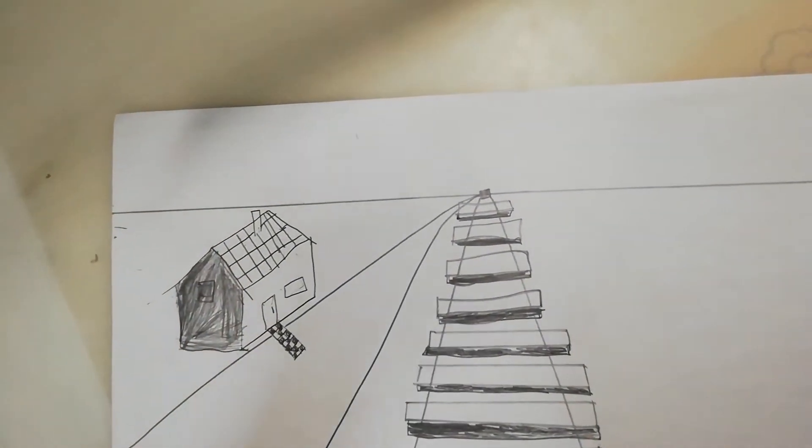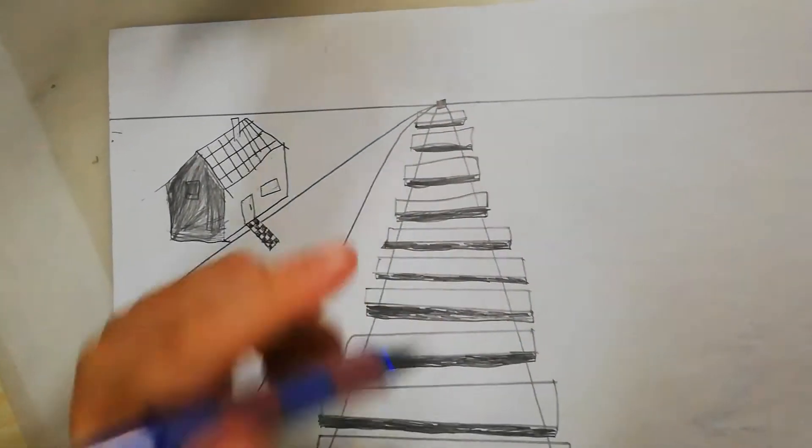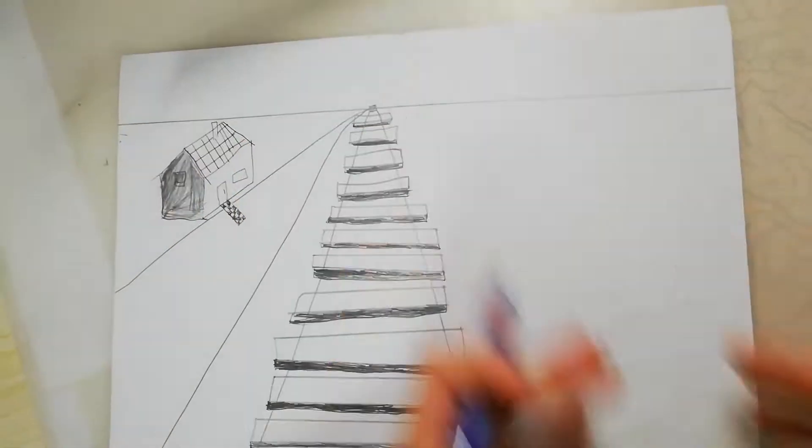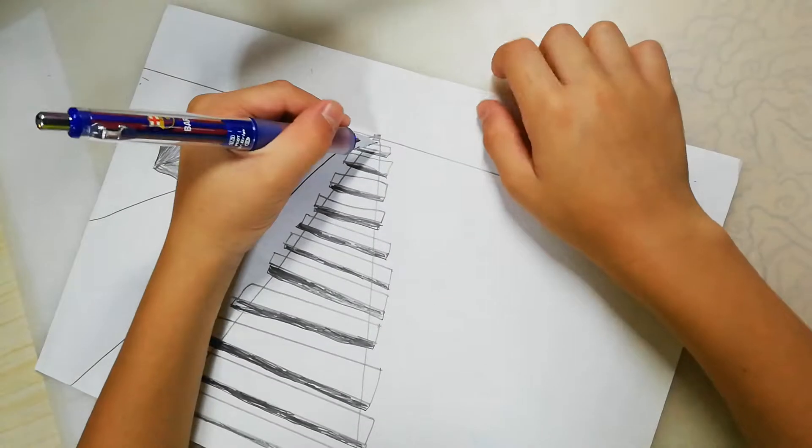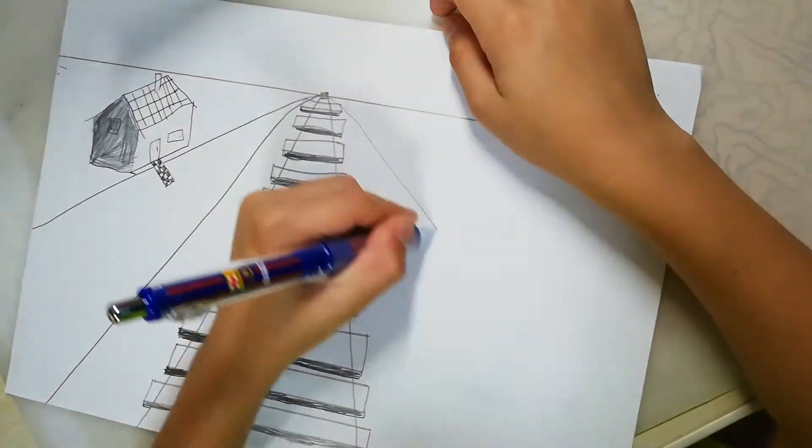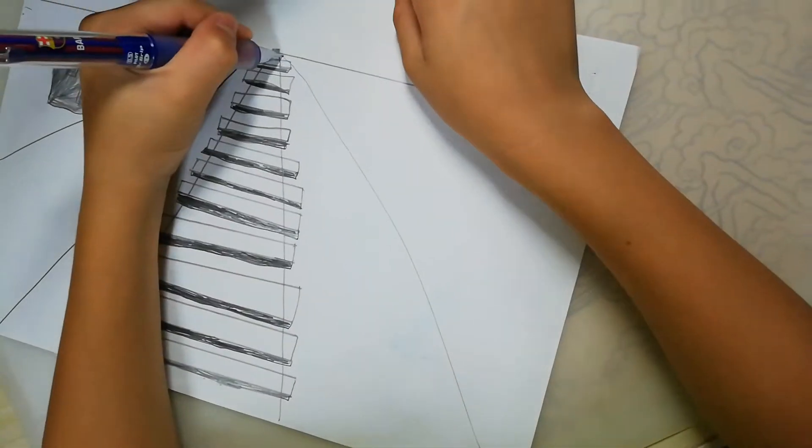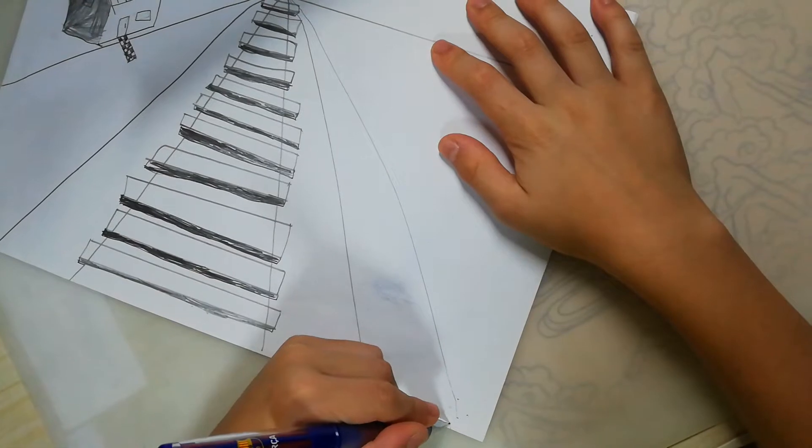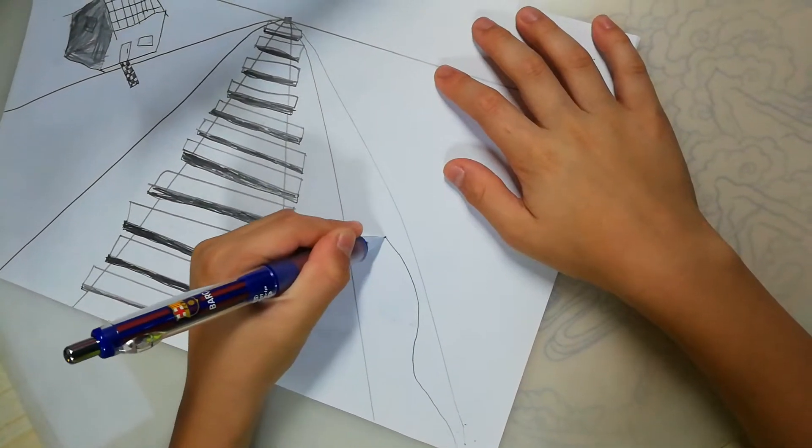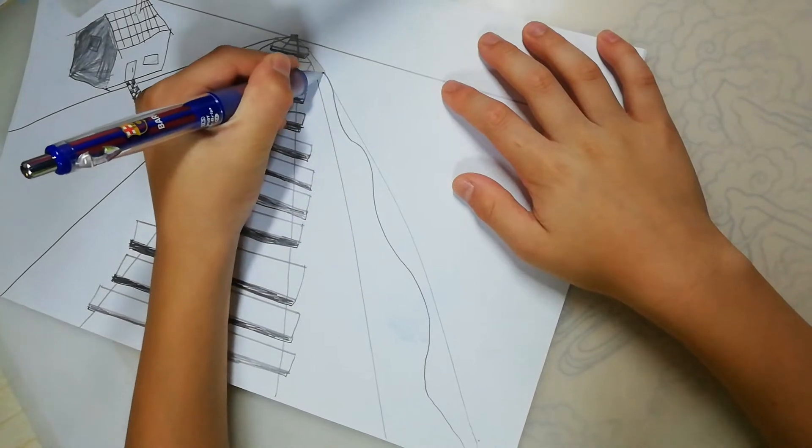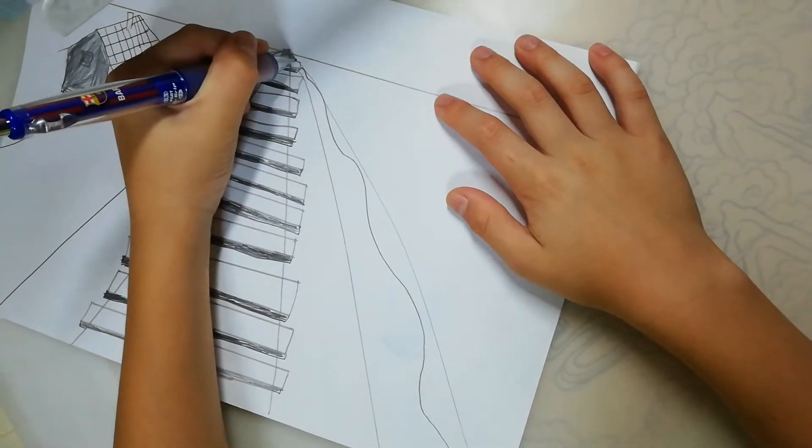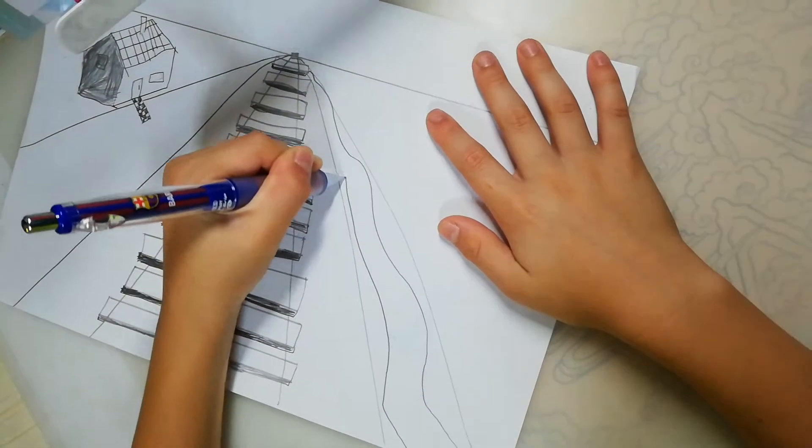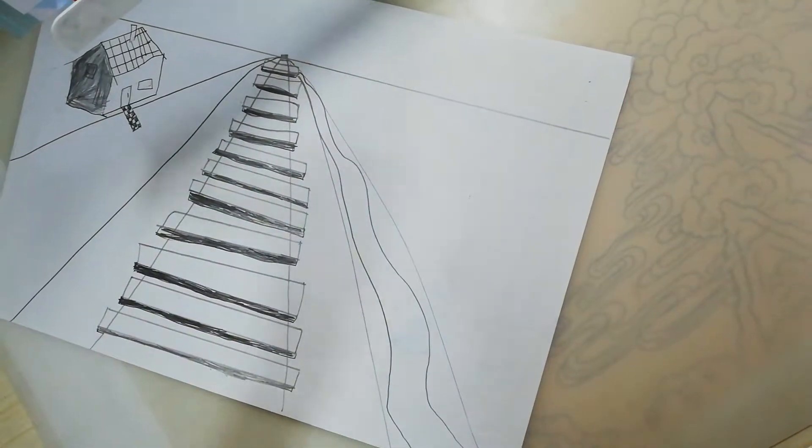And on the other side, which is this side, you can think of like a little another path or whatever you want. But today I'm going to draw a river. First, you need two lines right here. Now inside, do this, this, and make sure it goes there until it disappears, until it disappears. And you can see, and here the same. Now erase the lines on the side.